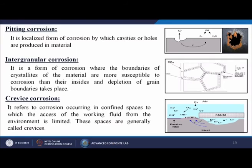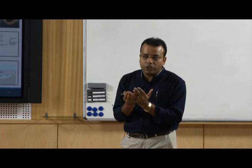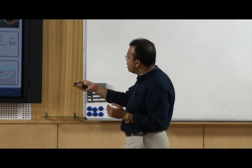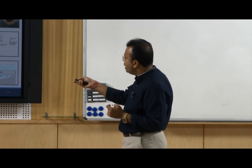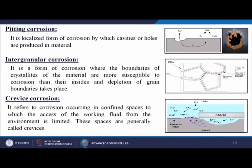Intergranular corrosion is generally seen when making alloy materials or composite materials. That corrosion takes place at the crystal structure or granular side of that material. The material has two or more different phases — there may be weak additions between the metals or some kind of phase separations between the metals by which cracks may generate between them — this is known as intergranular corrosion.